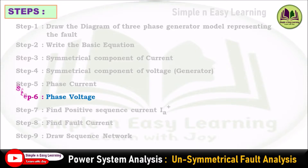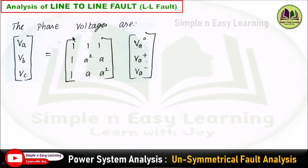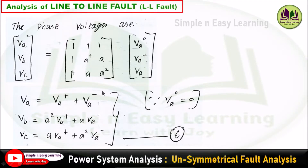Step 6: consider the phase voltage. The phase voltage equation is [Va, Vb, Vc] = T × [Va0, Va+, Va−]. Expanding with Va0 = 0: Va = Va+ + Va−; Vb = A²·Va+ + A·Va−; Vc = A·Va+ + A²·Va−. This is equation 6.